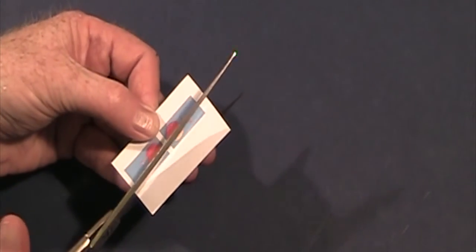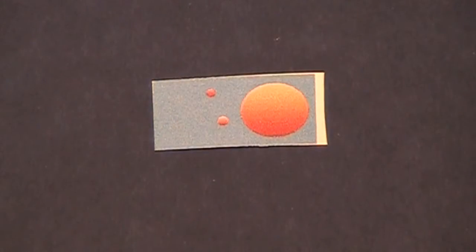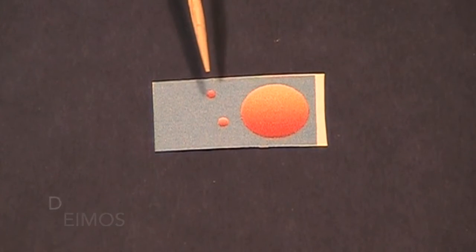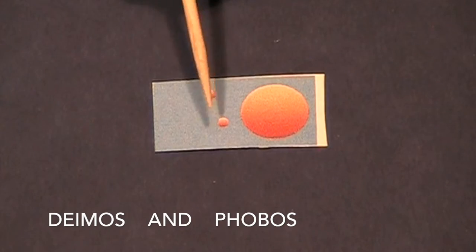Now, this one's a Mars flag, which is kind of fun. I'll tell you why. Right here is Mars, but Mars also has two moons, Deimos and Phobos. Kind of interesting.